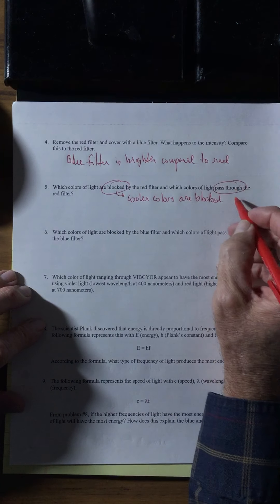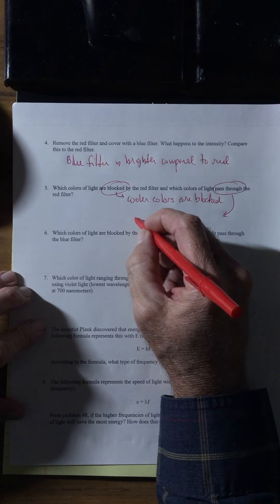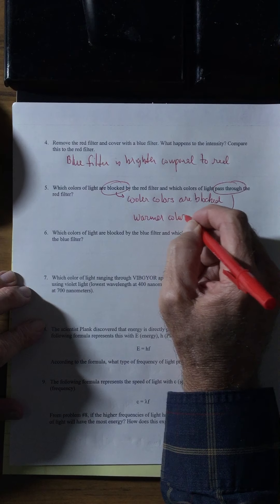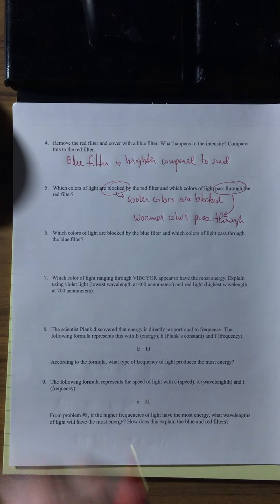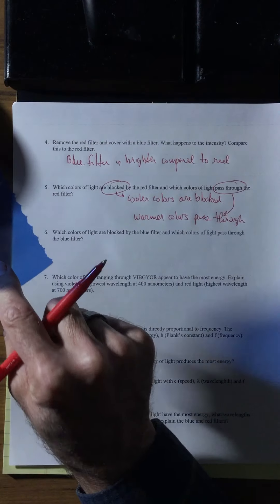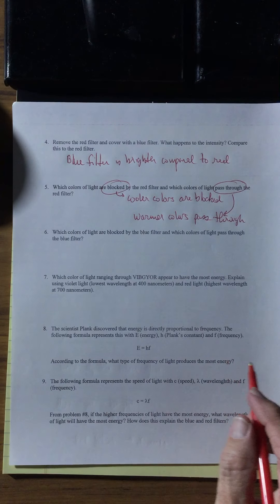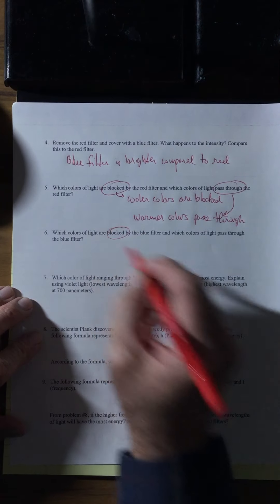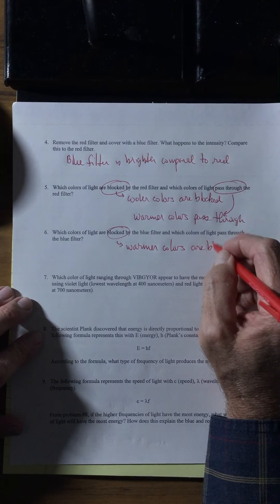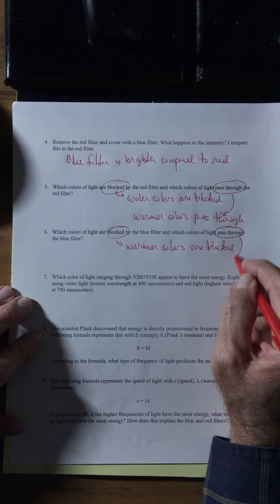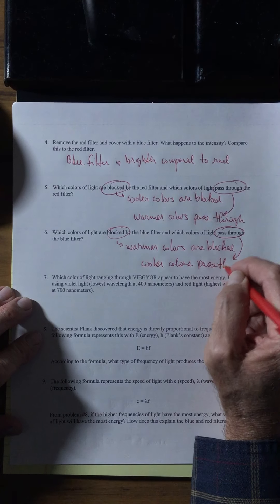Those cooler colors are being blocked, so which ones pass through? The cooler colors are blocked and therefore the warmer colors are able to pass through the red filter — warmer colors pass through. With the blue filter it's the opposite. The paper becomes blue, so blue must be passing through. What's blocked by the blue filter are the warmer colors — warmer colors are blocked, and the cooler colors pass through.